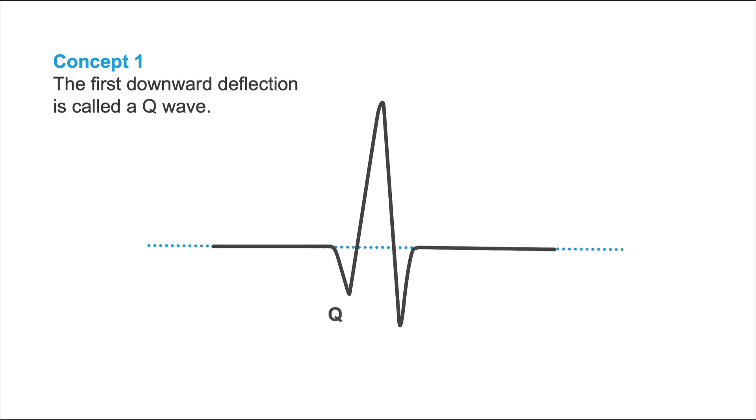Let's have a closer look at the QRS complex, which corresponds to ventricular depolarization. Each component of the QRS complex has a name. The naming of these components follows a standard nomenclature. There are only five fundamental concepts that you have to understand when it comes to naming these components. Concept number one: the first downward deflection is called the Q-wave.